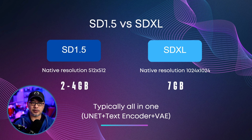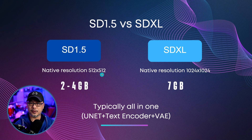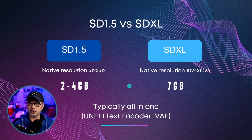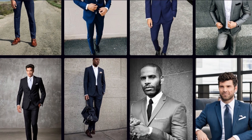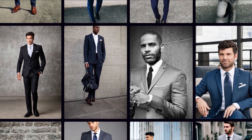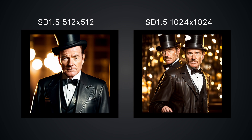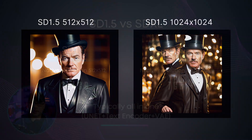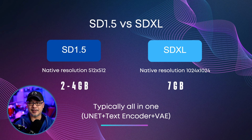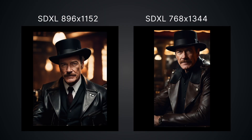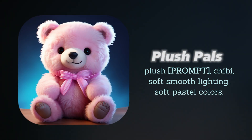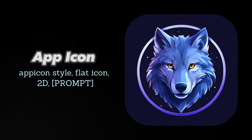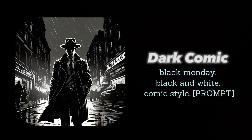A few things to point out with SD 1.5 and SDXL. Native resolution for SD 1.5 was 512 by 512, while SDXL's native resolution was 1024 by 1024. Why that's important is because with a native resolution of only 512, the further you got away from that — say you're doing an image at 832 by 640 — it was more prone to deformities: double heads, weird hands, distorted faces. But with SDXL, because the native resolution was 1024 by 1024, there was a big improvement in image quality, enabling you to make images that were bigger in size.